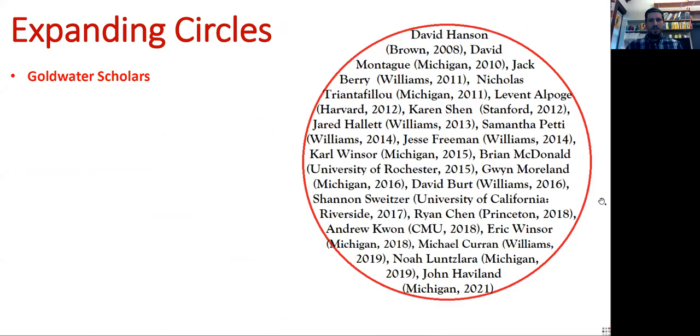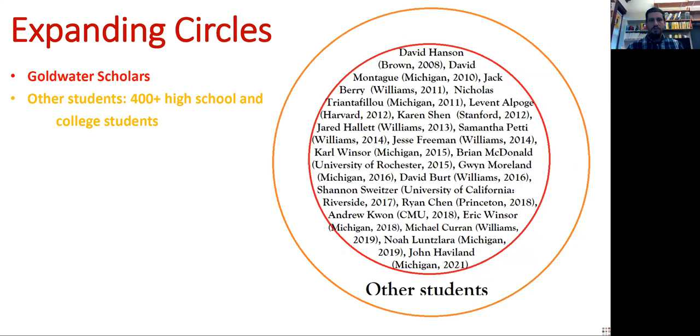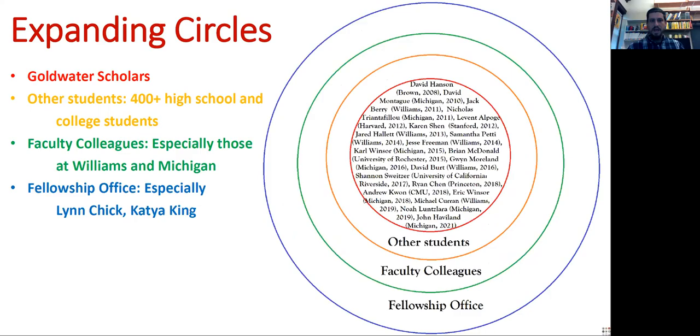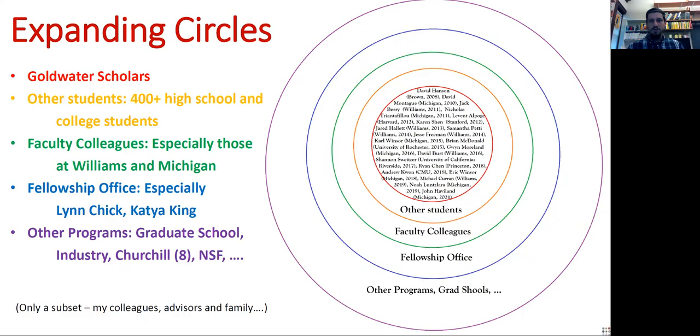I want to use expanding circles as a nice way to describe just exactly how many people I need to thank for what is happening today. The first, of course, are the Goldwater Scholars, the people I've worked with who won a Goldwater Award after working with me. But this is merely a small subset. There's over 400 other students, high school students, college students, who have worked with the students and myself, and who helped create the atmosphere where these results were done. And then, of course, there's all my faculty colleagues, especially those at Williams and Michigan, who helped create the environment where this research could continue. And then there's the people in the fellowship office, especially at Williams, Lundshik and Katja King, who helped our students find opportunities like the Goldwater and others.